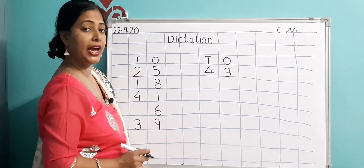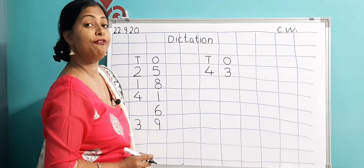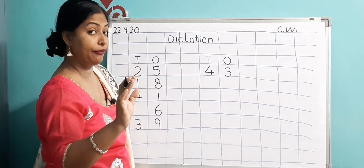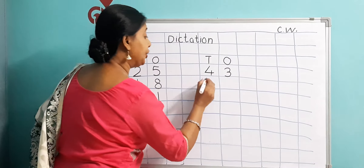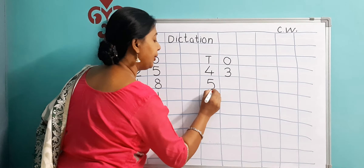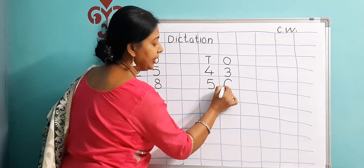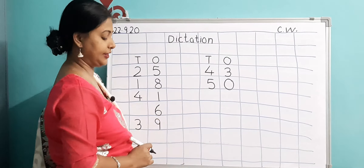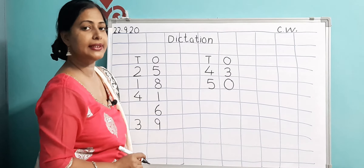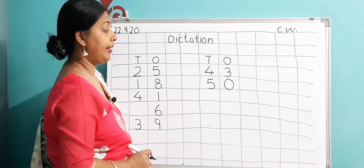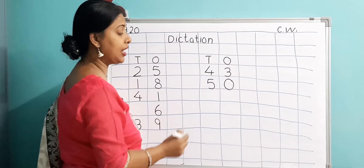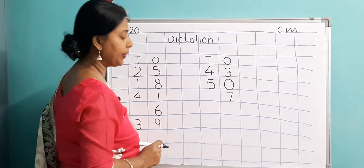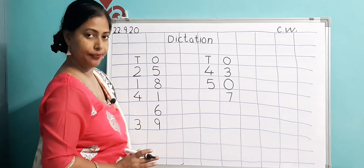Now after 43, write 50. Listen carefully — 50. That means only 50. So you will write 5 in the Tens column and 0 in the Ones column. This is 50 — 5 0, 50. Next number is a single digit number — 7. This is only a one digit number, so automatically under the Ones column you will write 7.